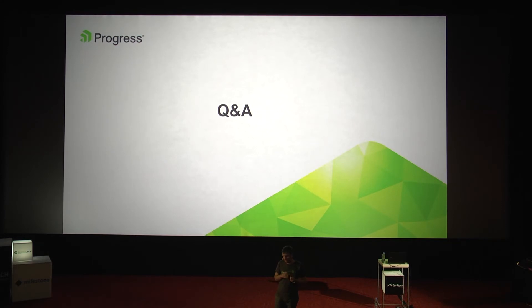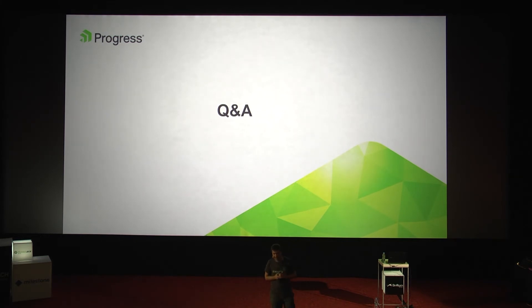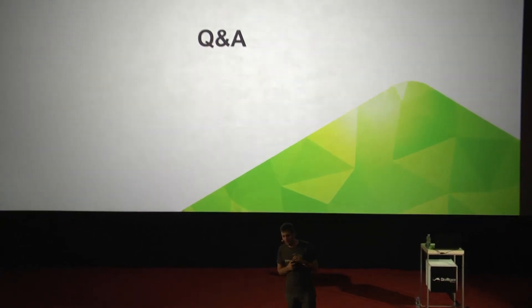The question was: do you believe UWP controls will eventually all be exposed and wrapped so they can be used from the toolbox? I believe yes, because some controls like WebView and InkCanvas are already wrapped — you just add a reference to the package and they appear in the toolbox for drag and drop. It's just a matter of time. Actually, yesterday I saw that the map control is wrapped as well, so more and more controls are coming.